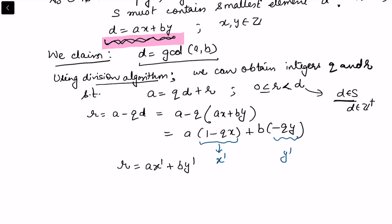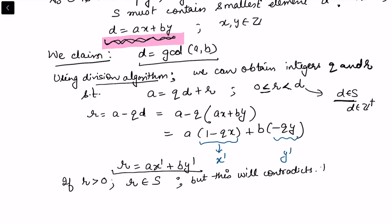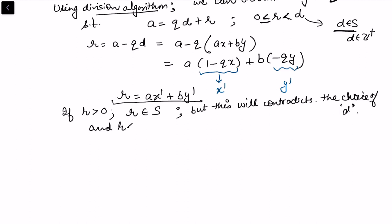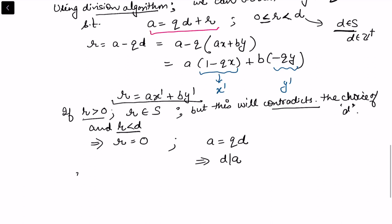Now r ≥ 0. If r were strictly positive, then r would belong to S because of its representation as ax′ + by′. But this would contradict the choice of d as the smallest element, since r < d. Therefore the only possibility is r = 0. So a = qd, which implies d divides a.